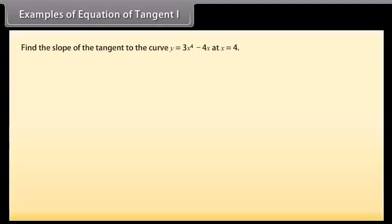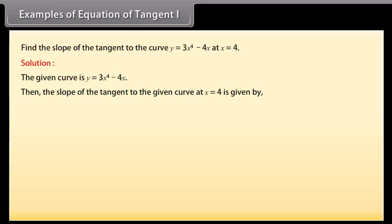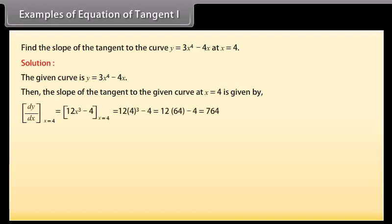Find the slope of the tangent to the curve Y = 3X⁴ − 4X at X = 4. Solution: The given curve is Y = 3X⁴ − 4X. The slope of the tangent to the given curve at X = 4 is given by DY/DX at X = 4, which equals 12X³ − 4 at X = 4, equals 12 × 4³ − 4, which can be solved to 764.